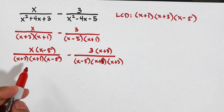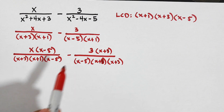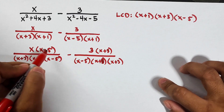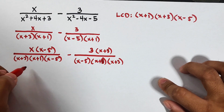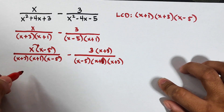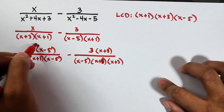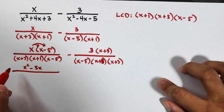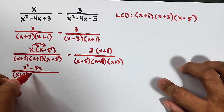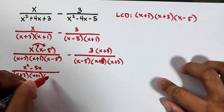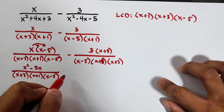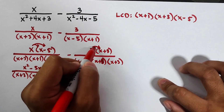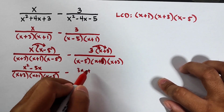Since we now have the same denominator, we copy the common denominator and subtract the numerators. First we simplify the numerators using the distributive property: x times x is x squared, x times negative 5 is minus 5x, over the common denominator x plus 3 times x plus 1 times x minus 5. For the second fraction: 3 times x is 3x, and 3 times 3 is plus 9.